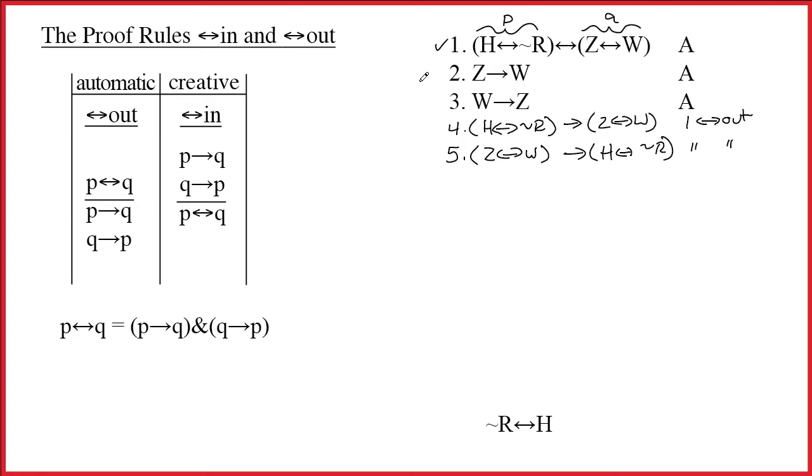We worked on line one. We're working our way down. Line two and three both have arrows as their main connectives, but obviously we don't have a Z or a W to do arrow out, so two and three can't work on them right now. Line four and five have single arrows because they came from one. Let's look at line five first, because this is the one that's more interesting for our purposes. When we look at this line, we think to ourselves, if I had Z double arrow W on another line by itself, then I could write H double arrow tilde R. Do we have Z double arrow W on another line by itself?